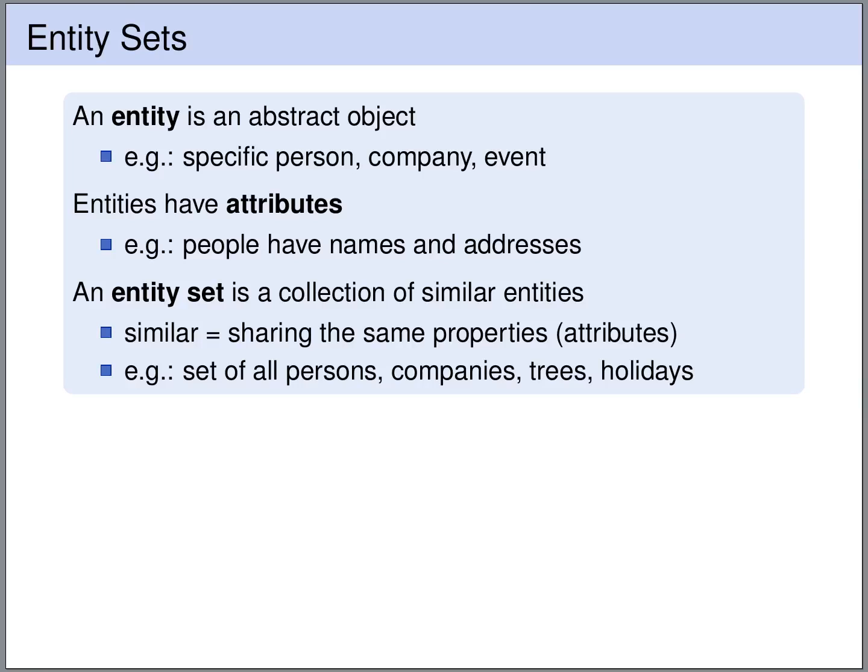An entity is an abstract object. Think for instance of a specific person, a specific company, or a specific event. Entities have attributes. People have names and addresses; events have a location, a time, a date, and so on. An entity set is a collection of similar entities, and similar here means they share the same properties, the same attributes.